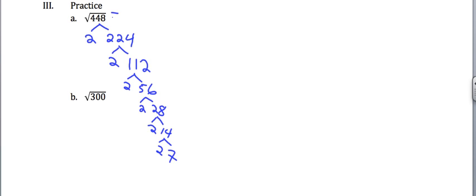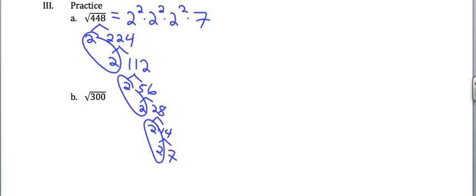So, I'm going to circle these in pairs so I know what pairs I've got here. I've got 2 squared three different times, times the leftover 7. Put that under my square root. I'm going to skip that middle step here. The square root of each of those two squares is going to be 2. The square root of 7 I can't do without getting a decimal.